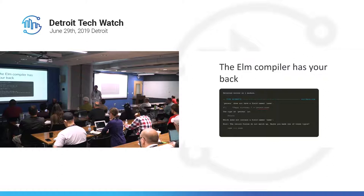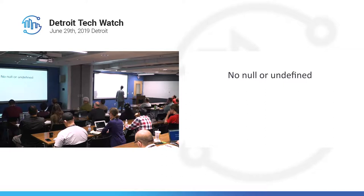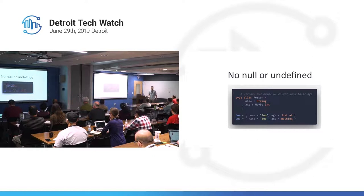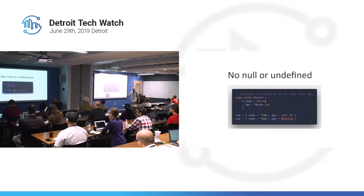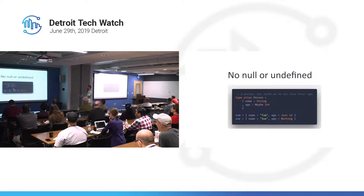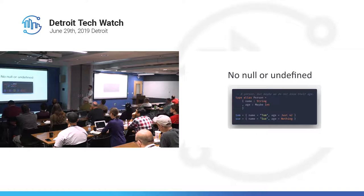In Elm, there's no null or undefined, but we still have unknowns — we have to figure out how to handle those things with the language. You can think of this person definition kind of like a table schema, or it's called a record — you might think of it like a POCO object or a DTO. Person has a name, which is a string, and then there's age, which is maybe int. That's the interesting part of this definition.